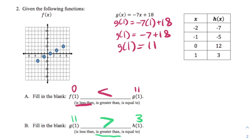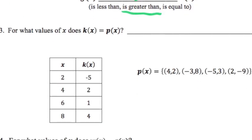Now we're back to another question where they ask us when are these two equal: when does k(x) equal p(x)? Well, we're just going to compare the two. So when x is two, k(x) is negative five. Over here when x is two, k(x) is negative nine. So two does not have the same output for the two functions, so that's not going to work.